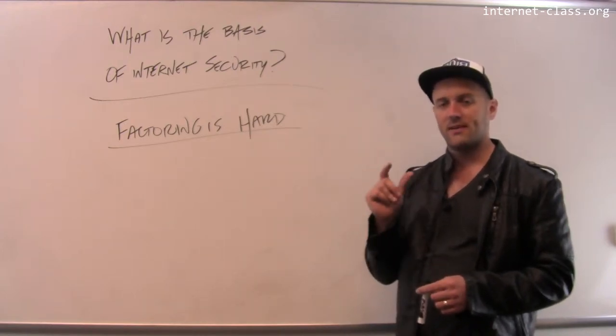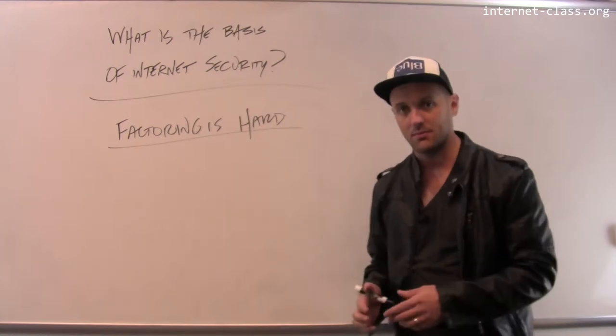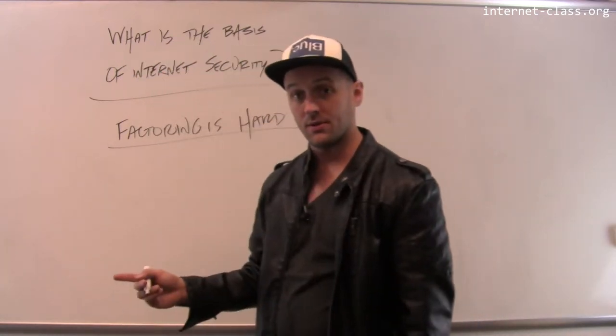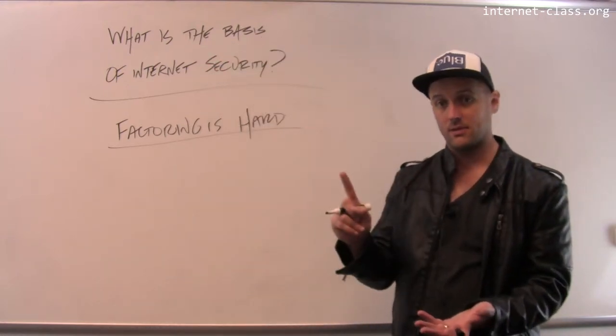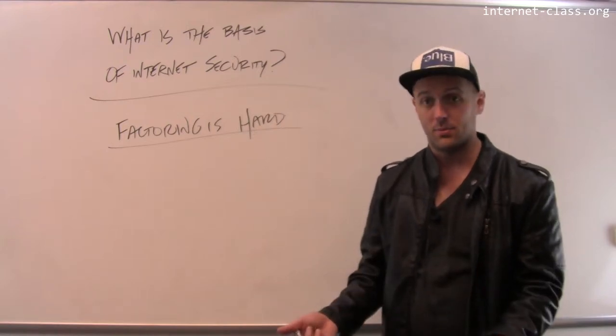Let me give you an example of the type of problem we're looking at. Let's say we have two prime numbers. Remember, prime numbers have only one factor. A prime number is only divisible by itself and one. Seven is an example of a prime number; nine is not a prime number because nine is divisible by three.